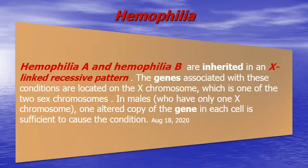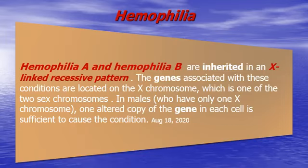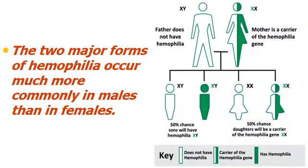Both hemophilia A and hemophilia B are inherited as an X-linked recessive pattern. The genes are located on the X chromosome, and in males who have only one X chromosome, any altered copy of the gene is sufficient to cause the condition. Therefore, these conditions occur much more commonly in males — females are the carriers and males are the ones who suffer. For example, if a father without hemophilia marries a carrier mother, there is a 50% chance the sons will have hemophilia and a 50% chance the daughters will be carriers.